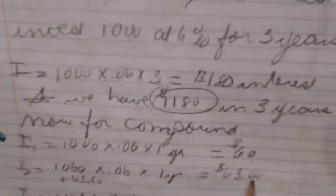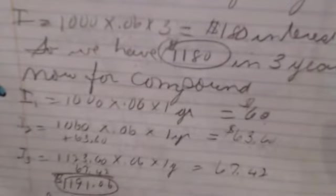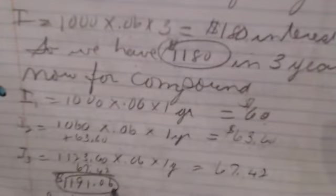And that's going to make me $63.60. I add that $63.60 back. So now I have $1,123.60, that's 6% for one year. And it makes me $67.42. And I add that back to what I had, and I end up with $1,191.06.